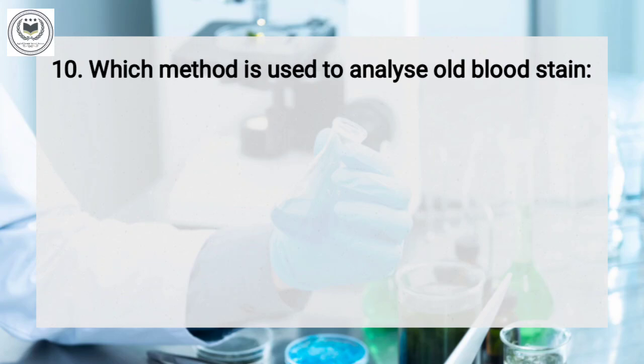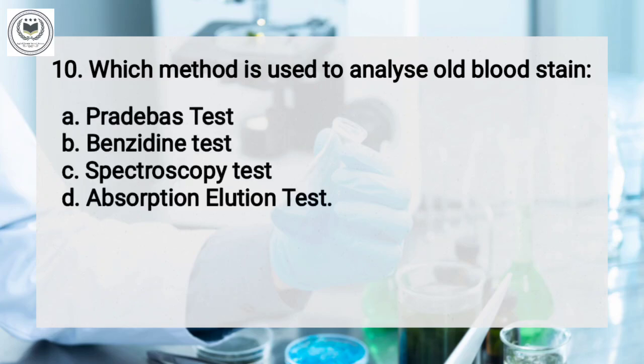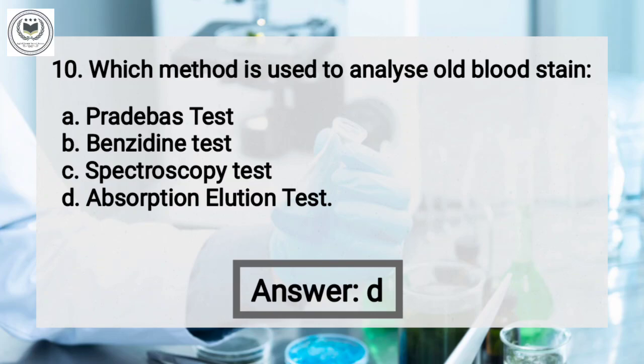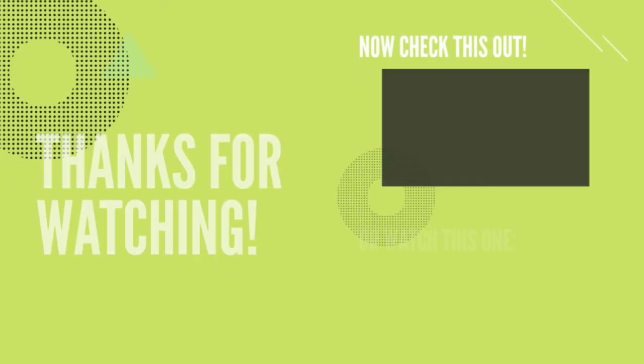Question number 10: which method is used to analyze old blood stains? Option A: Cradboss test, option B: Benzedine test, option C: Spectroscopy test, option D: Absorption elution test. And the answer is absorption elution test. Thank you.